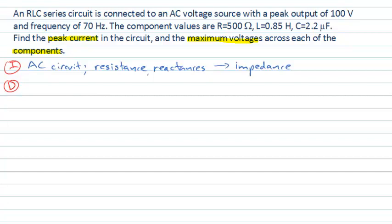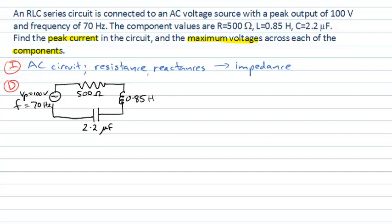In our development stage, it might be useful to have a diagram here. So here might be our AC voltage source going through in series, a resistor, an inductor, and a capacitor, and we can put some values on here to make sure we've understood the question correctly. There's a 500 ohm resistor, there's a 0.85 Henry inductor, and there's a 2.2 microfarad capacitor. We have a voltage source here that's got a peak voltage of 100 volts and it's operating at a frequency of 70 hertz. So there's our circuit.